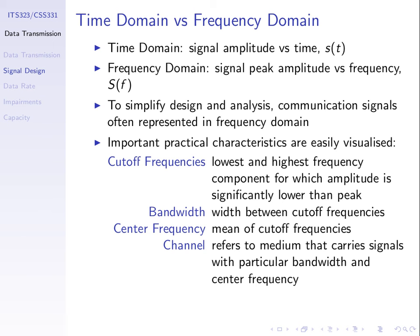A communications channel refers to a medium that carries signals with a particular frequency and bandwidth. When transmitting a WiFi signal, I transmit with a particular bandwidth and centre frequency — that's a channel. If you've configured a WiFi access point, you can select channel 1, 6, or 11. Those channels correspond to a centre frequency and particular bandwidth. My laptop is currently using centre frequency 2.462 GHz — that's the centre point.